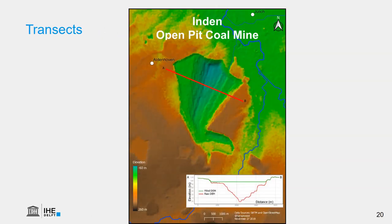GIS also comes with a lot of analysis tools, such as creating transects. In this example we see a transect through an open pit mine. The red line gives the elevation before applying the fill sinks algorithm used in hydrology, while the green line shows the result after.